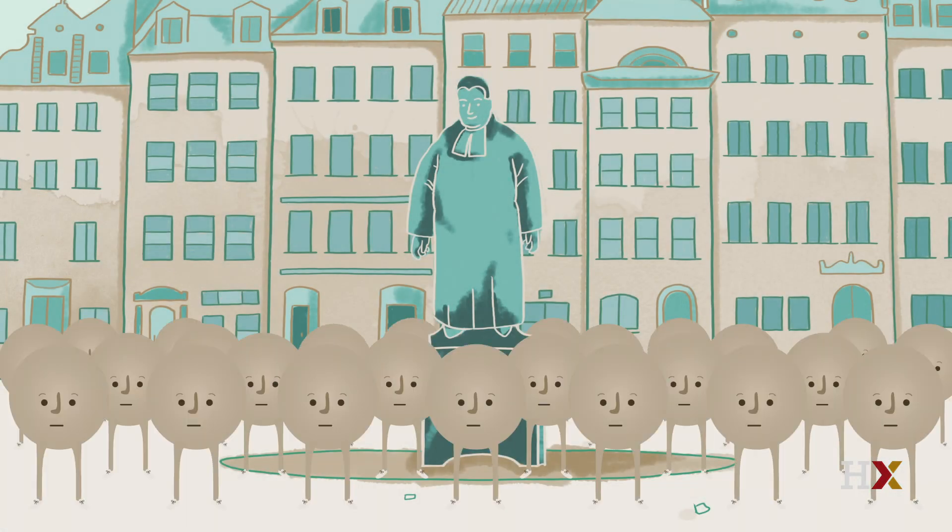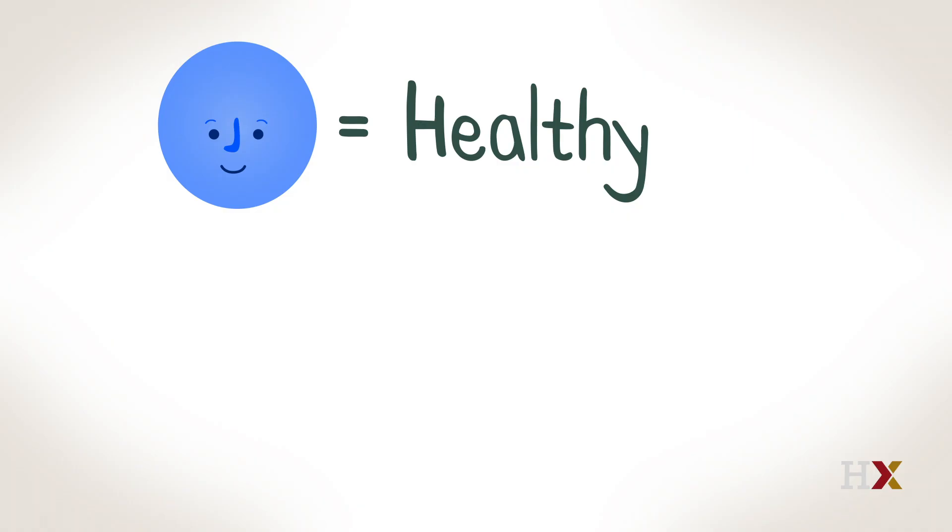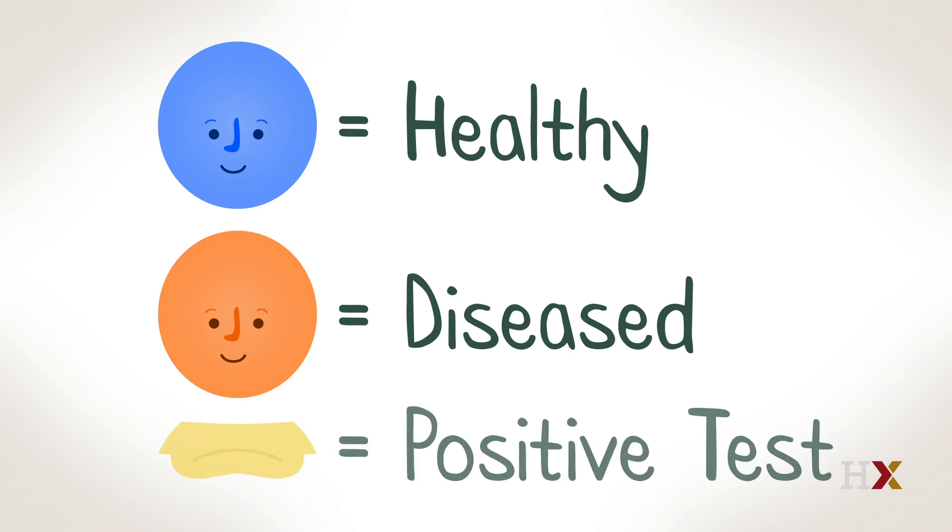Let's imagine that we conduct the test for every single person in Baysville, and assign each person who tests positive for conditionitis a yellow hat. Recall that healthy people are represented as blue, diseased people are represented as orange, and a yellow hat represents a positive test result.